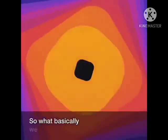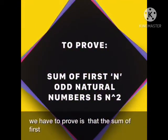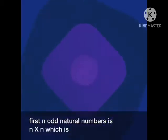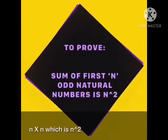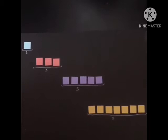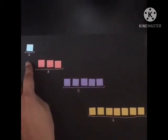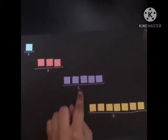What basically we have to prove is that the sum of first n odd natural numbers is n into n, which is n squared. Since we all know that the first odd number is 1, second is 3, third is 5, and fourth is 7.